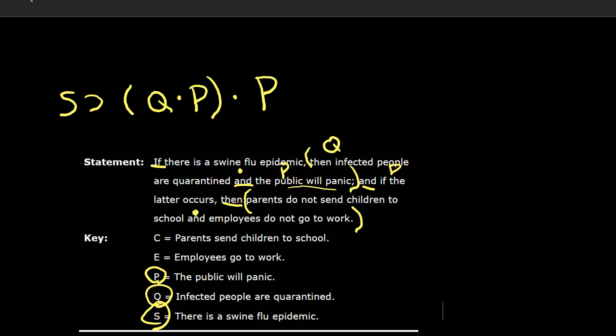Parents do not send children to school while C is parents do send their children to school. So this is going to be not C. And employees do not go to work. E is employees go to work. So this is going to be not E.